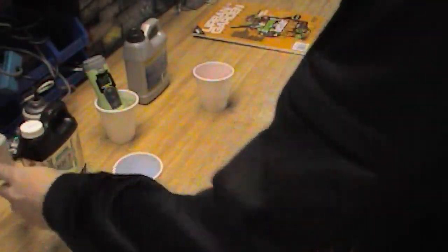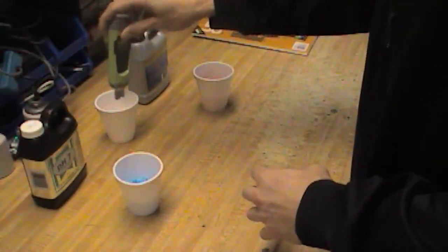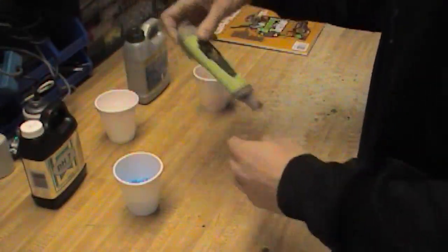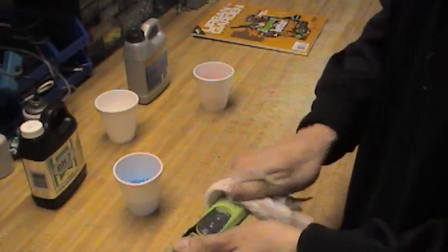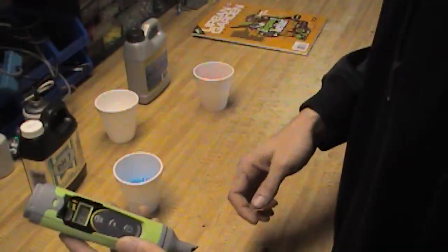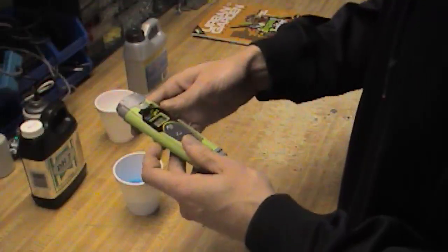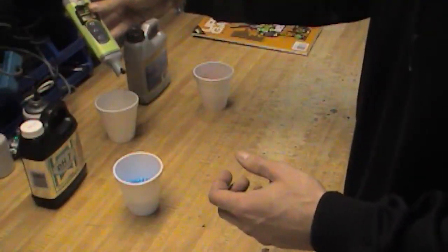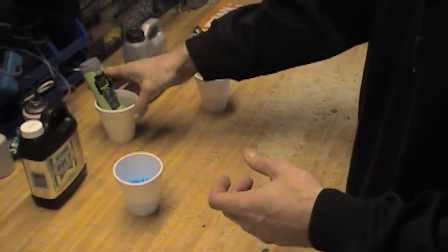All right, nothing tricky about it. Now the Oakton pH basic happens to be a very easy unit to use, comes with batteries straight out of the package. I'm just going to turn it on.